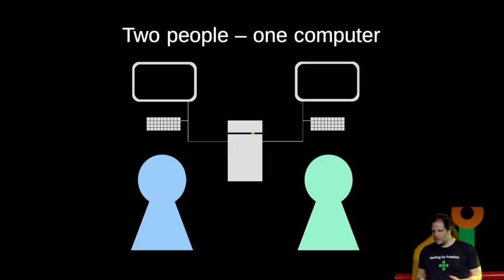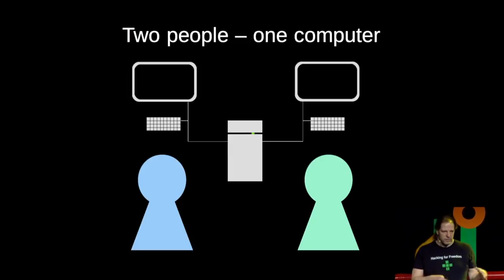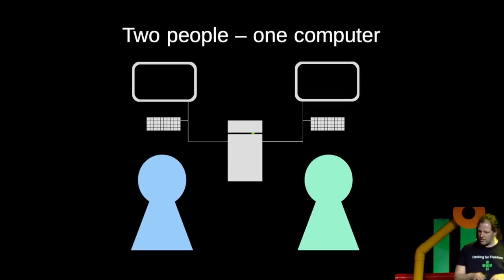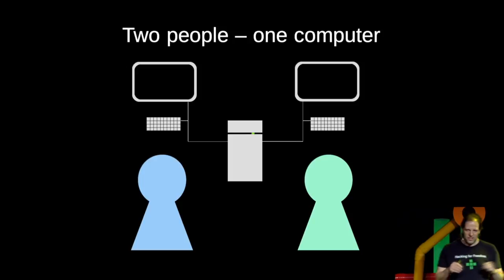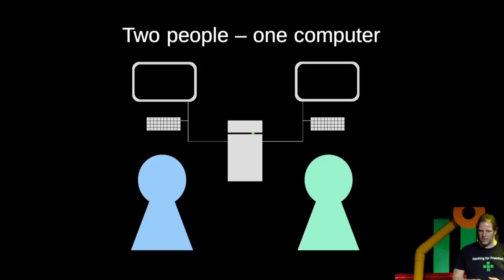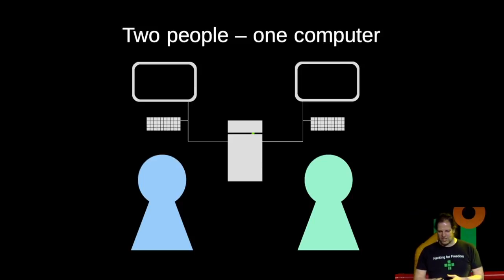What you usually do is separate roles. One is the driver — the person who has the keyboard and does the actual typing. The other is the navigator, who looks at longer-term things: how things are evolving, commenting on what the driver is doing, helping them, and avoiding mistakes.